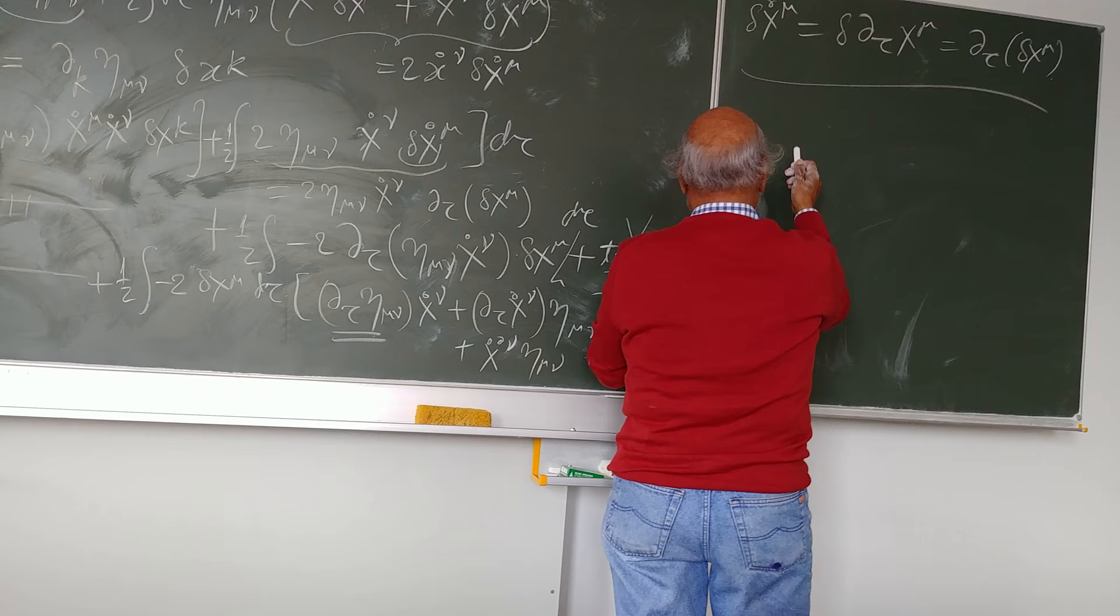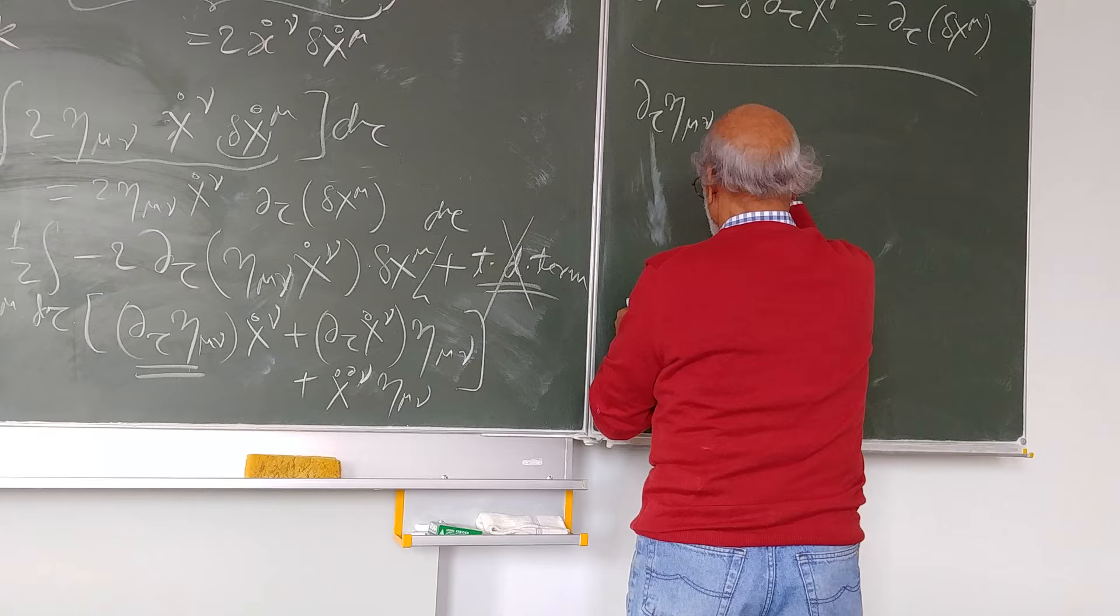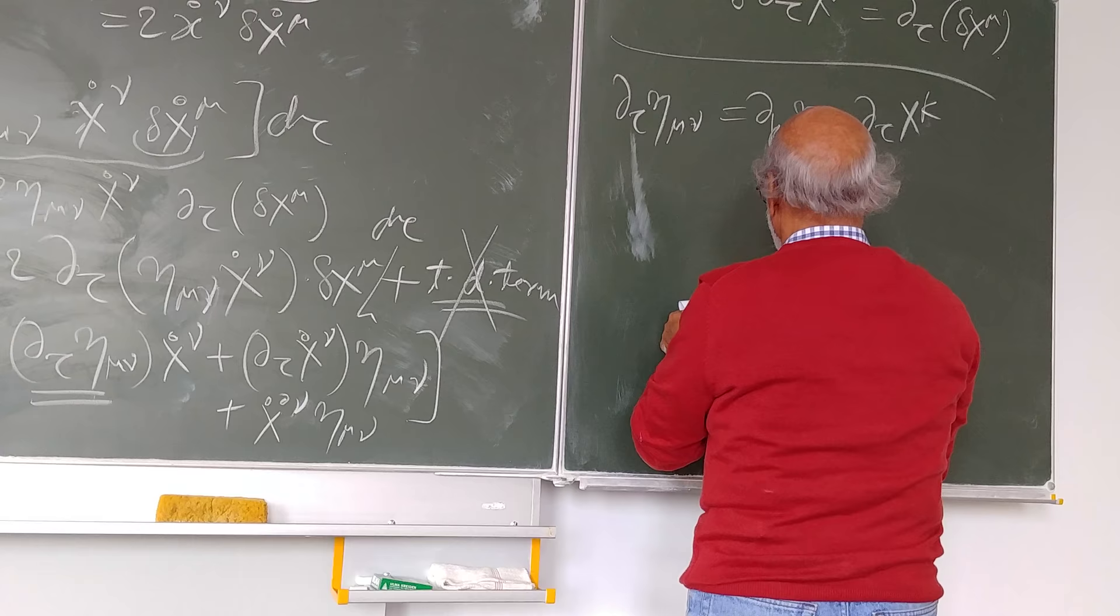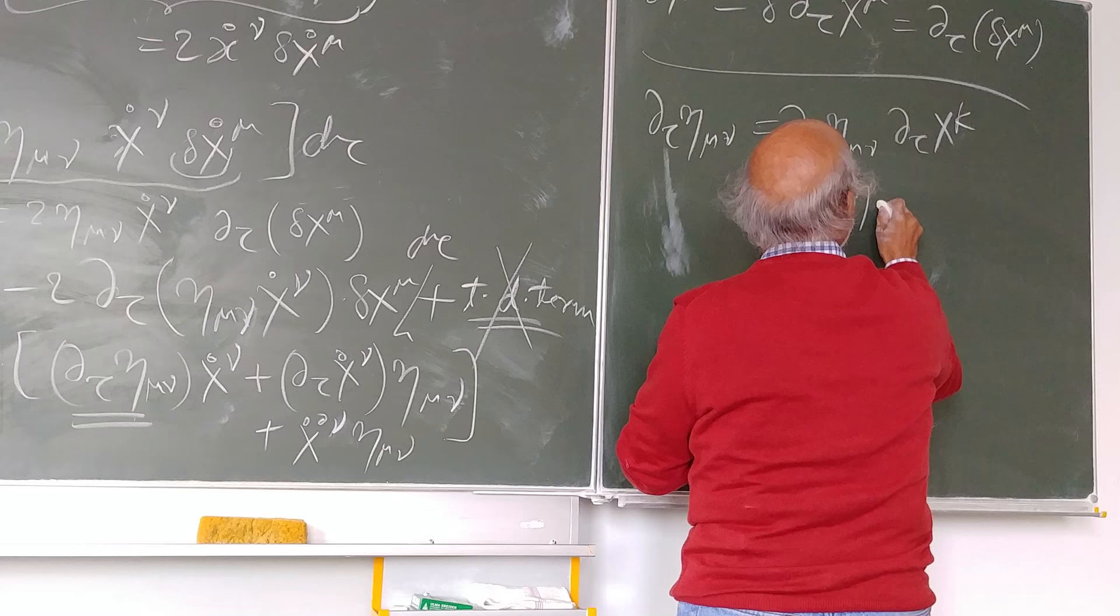Then tau of eta mu nu is equal to del k of eta mu nu del tau of x k, and this is del k eta mu nu x k dot.